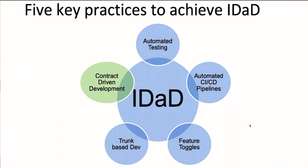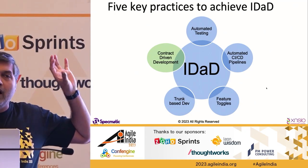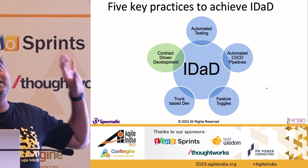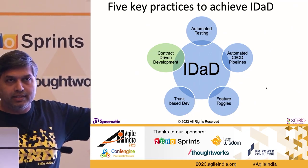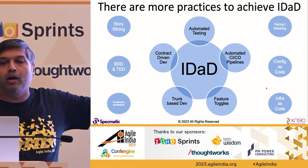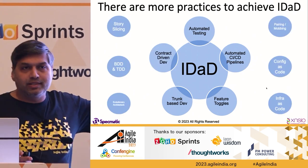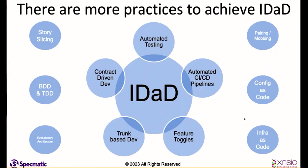I would say these five are absolutely necessary, but more practices can help you — like story slicing, BDD, TDD, config as code, infra as code. Some of these practices are absolutely helpful, but they're not the bare minimum you need.